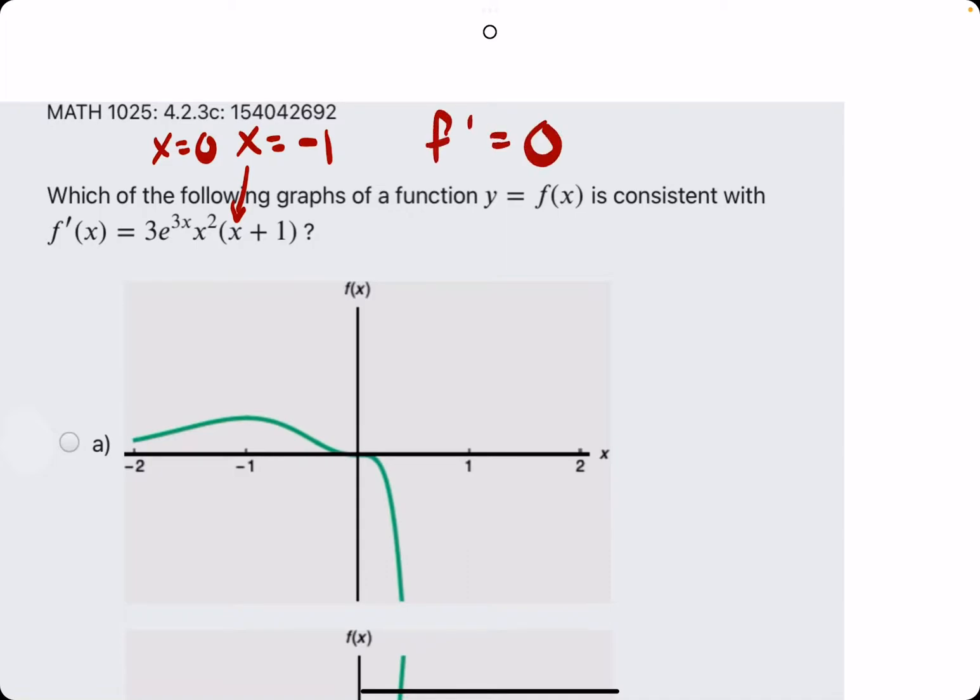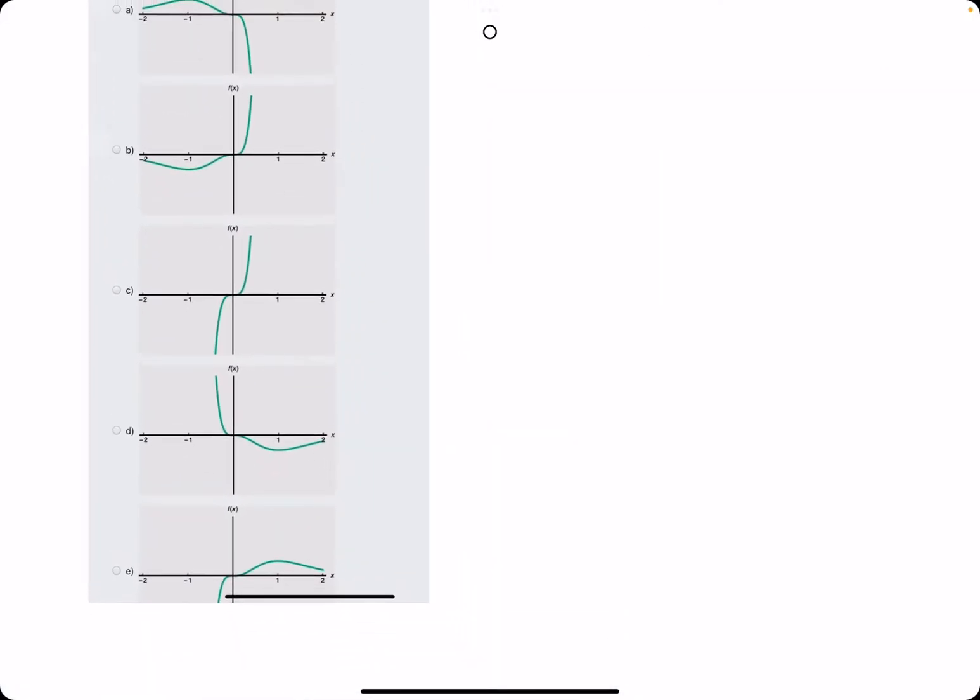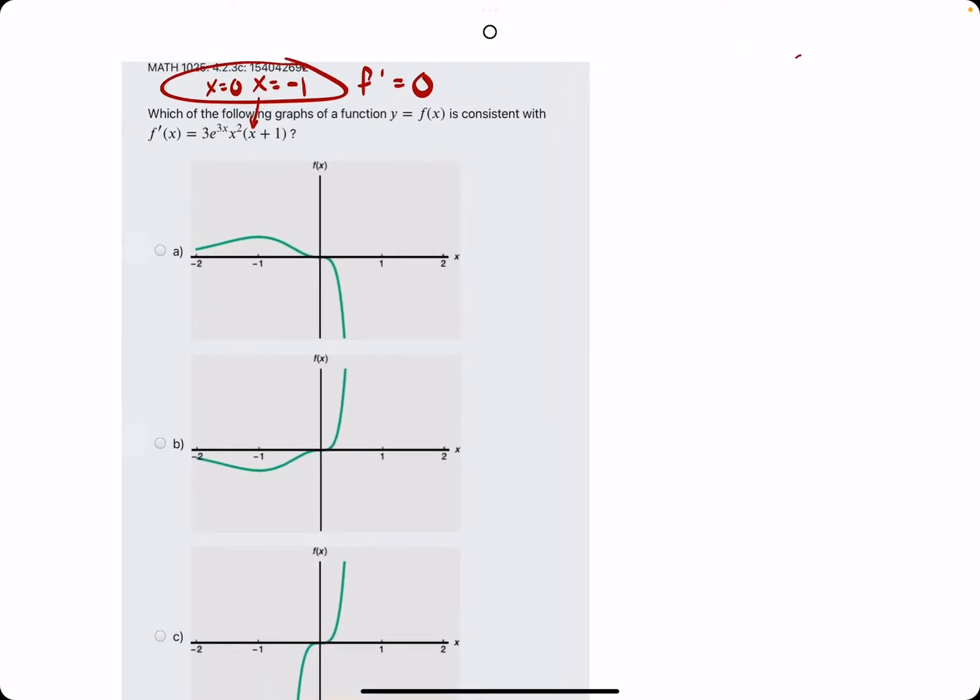And so f prime, the derivative, or in other words the slope of f, is equal to 0 at these two x values. So we're looking first for the function that has a 0 slope at negative 1 and at 0. Again, the negative 1 is the more important piece.